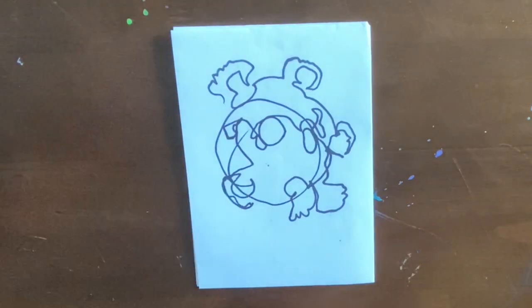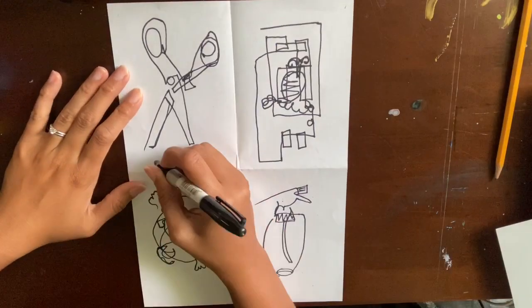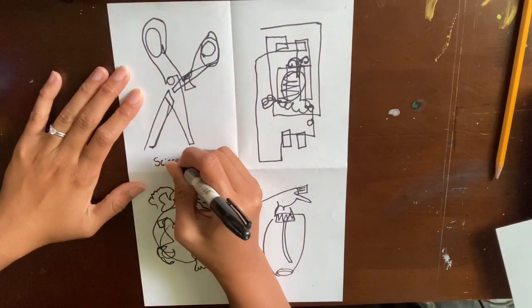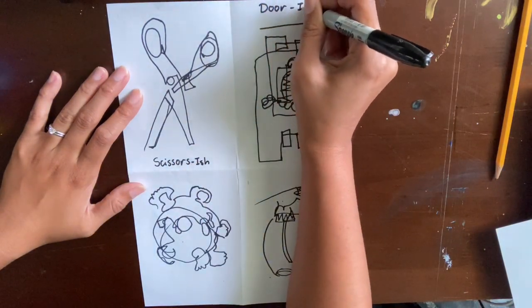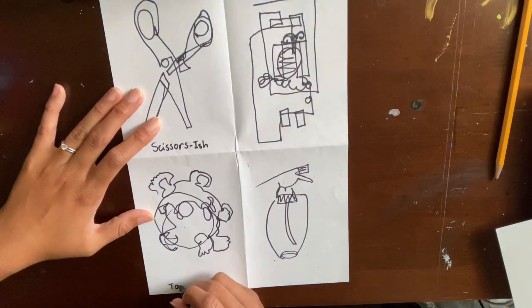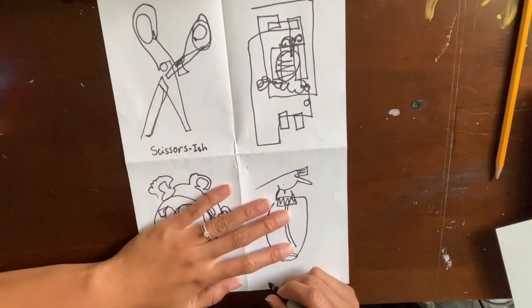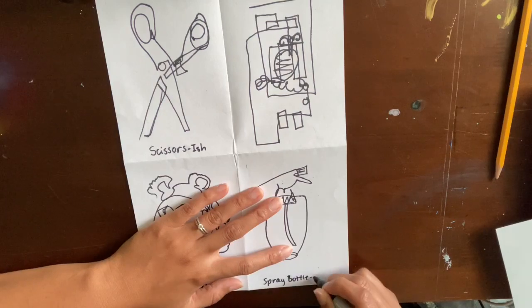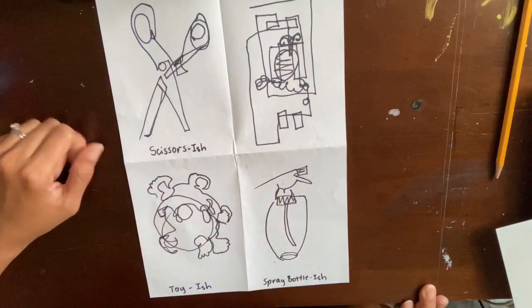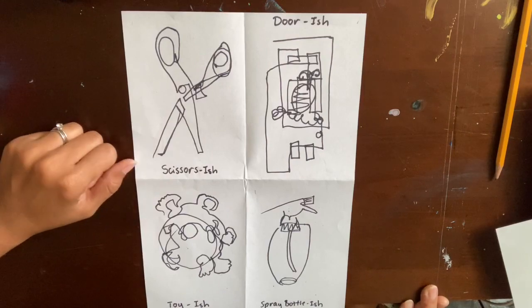You can usually tell if a blind contour is done correctly because they look pretty fluid. They are supposed to be kind of loose. They're supposed to be ish drawings. So go ahead and name your blind contours, scissor-ish, door-ish, whatever you drew-ish.